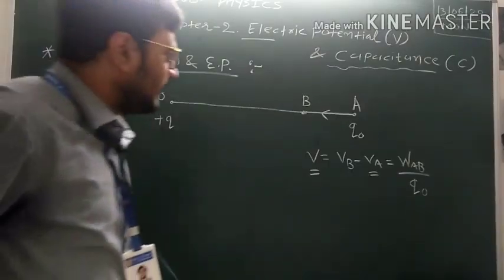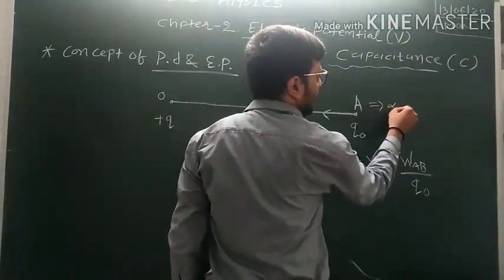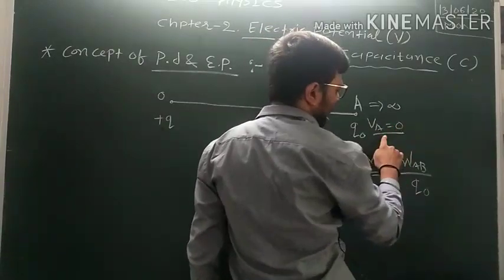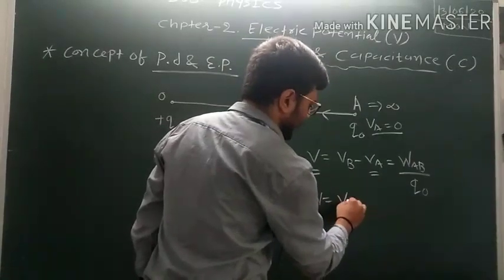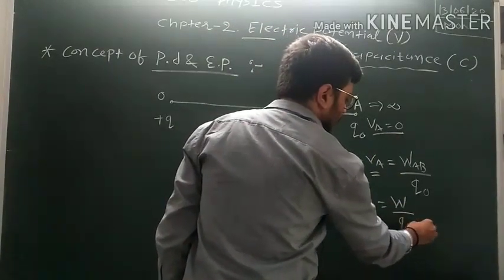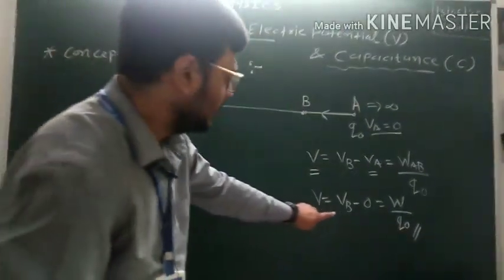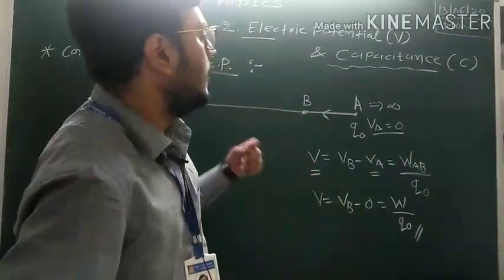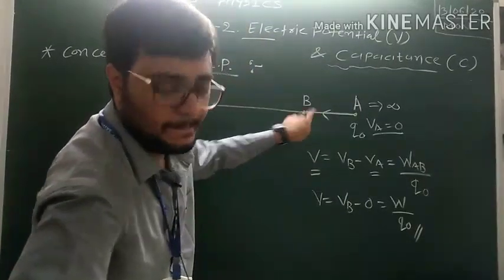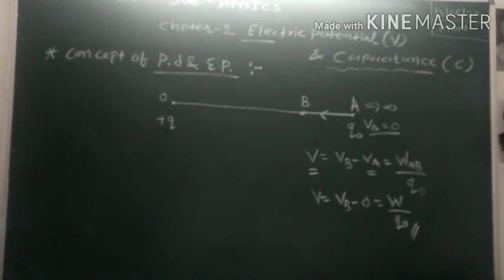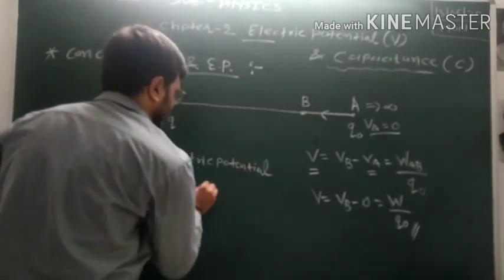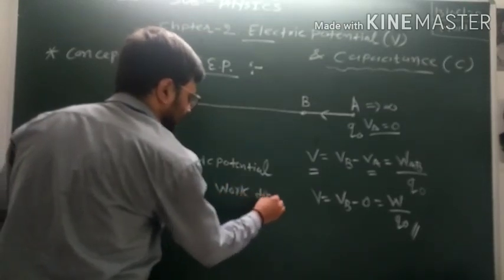Suppose we assume that point A lies at infinity, so A equals infinity. At infinity the potential is 0, so VA equals 0. Putting this value into the equation, we get V equals VB minus 0, which gives W upon Q₀. We conclude that this is the amount of work done in moving test charge Q₀ from infinity to point B, and VB refers to the potential at B.